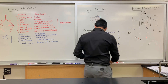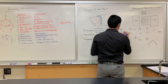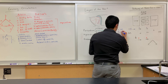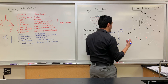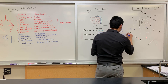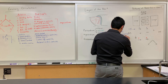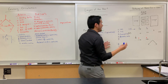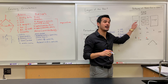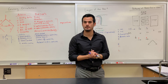The right atrium receives blood from the superior vena cava coming in at the top, and then the inferior vena cava directly underneath it. It also receives blood from the coronary sinus, and from the right cardiac vein, which empties directly into the right atrium.